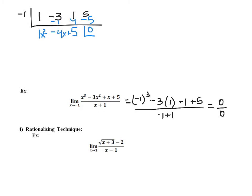So I can rewrite this limit as the limit as x approaches negative 1 of x squared minus 4x plus 5. Substituting in, I'm getting 1 plus 4 plus 5, and the limit for this answer would be 10. What I've done is rewritten this more complicated expression as a function that matches every single place except at negative 1.